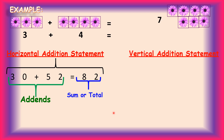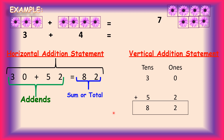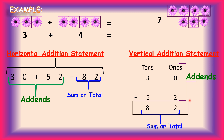Horizontal addition statements are used basically for smaller numbers. Now let's talk about vertical addition. A vertical addition statement is when we write the addition statement in a straight standing line. Here, 30 and 52 are the add-ins, and 82 is the sum or total.